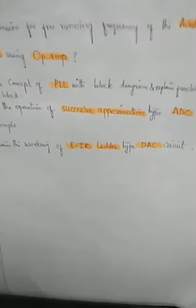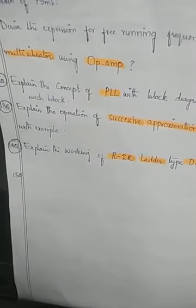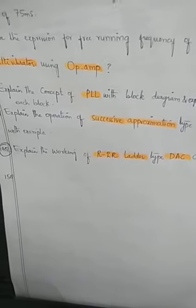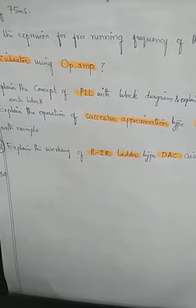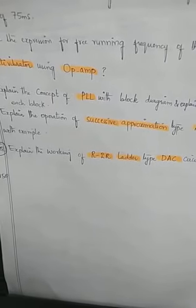Likewise: explain the successive approximation type of Analog to Digital Converter (ADC) with an example. This is the 13th question. Explain the operation of the successive approximation ADC — you have to do the A-to-D conversion by the method of successive approximation.